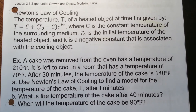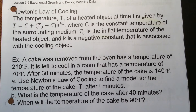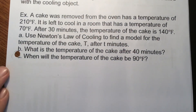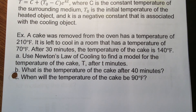Another application is Newton's Law of Cooling: T = C + (T₀ − C)·e^(kt), where C is the constant surrounding temperature (like room air), T₀ is the initial temperature of the heated object, and k is a negative constant since the object is cooling — a decay model. A cake is removed from the oven at 210°F, placed in a 70°F room, and after 30 minutes its temperature is 140°F.